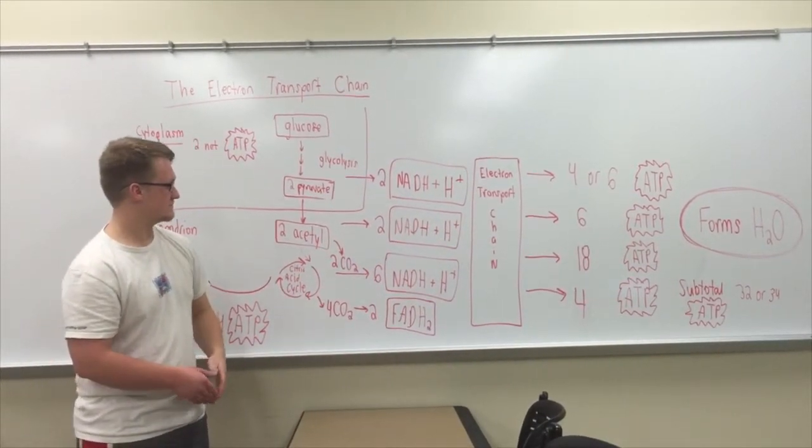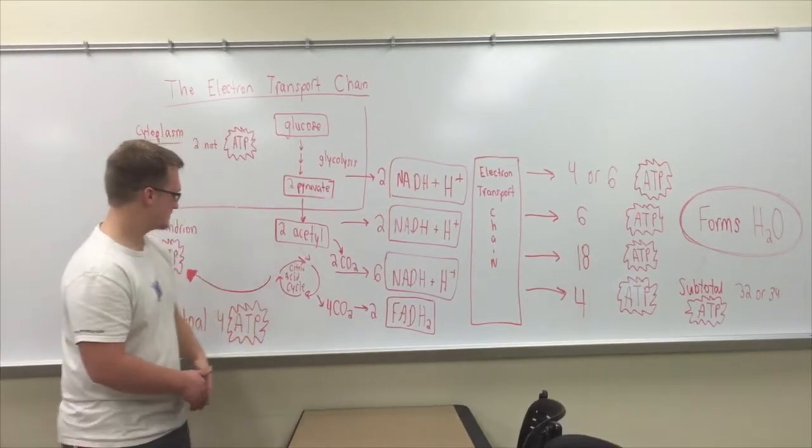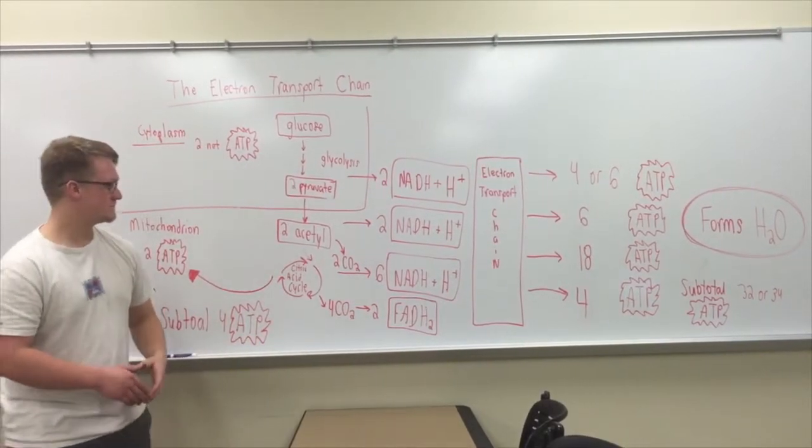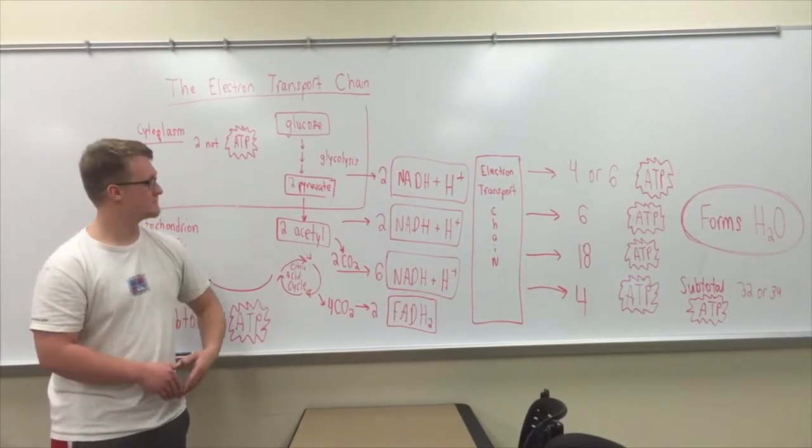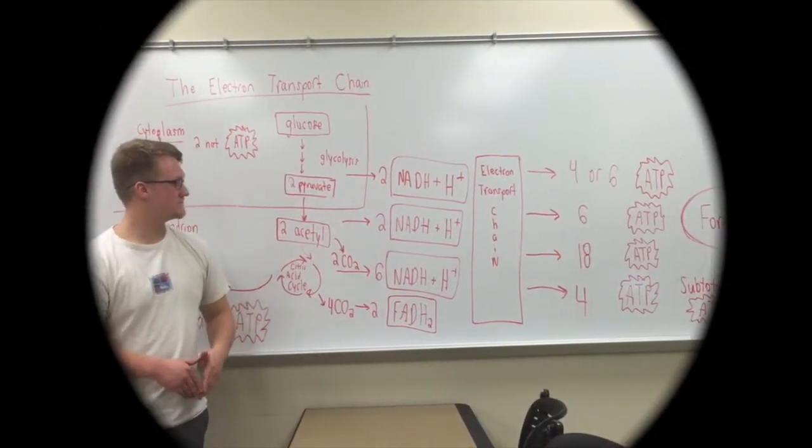Oxygen O2 is the final electron acceptor. It then combines with hydrogen ions H+ to produce H2O. All of the components of cellular respiration happen dependently with each other, and they are not linear.